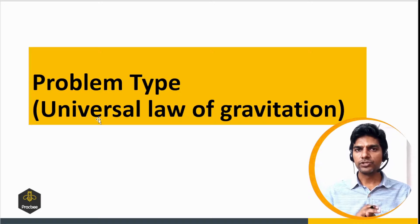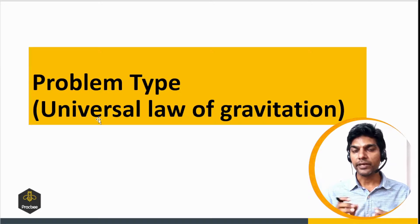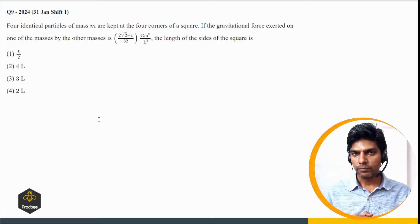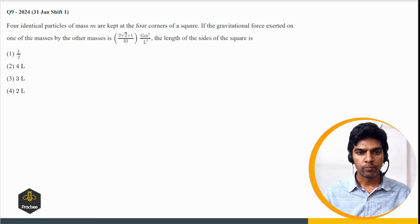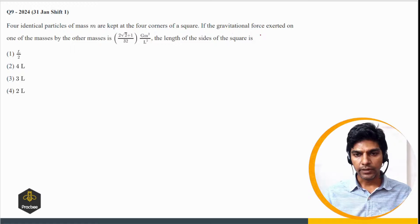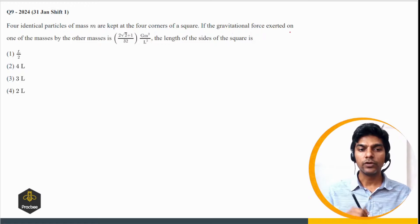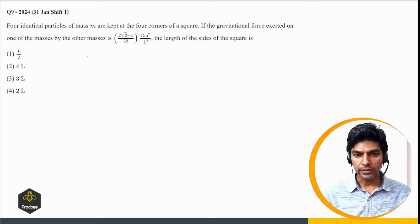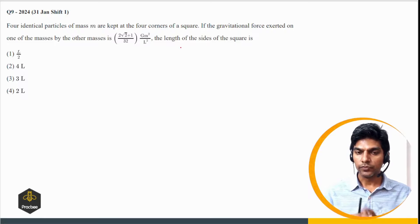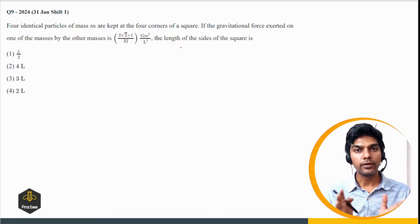Let's jump to the problem types. The first problem type is based on the universal law of gravitation. Let us see some numericals. Four identical particles of mass M are kept at the four corners of a square. The gravitational force exerted on one of the masses by the other masses is (2√2 + 1)/32 times GM²/L². We need to find the length of the side of the square.